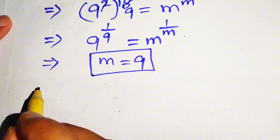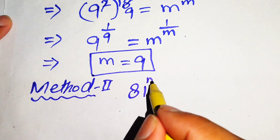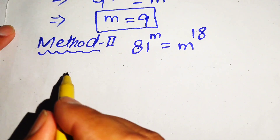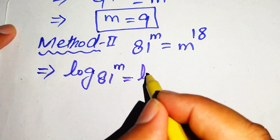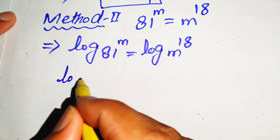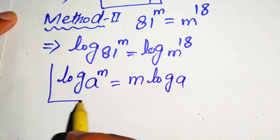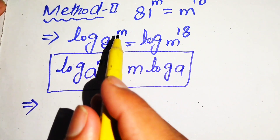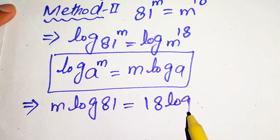Now we solve this problem by method two. The equation is 81 to the power of m equals m to the power of 18. In method two, we use the common logarithm on both sides, giving log of 81 to the power of m equals log of m to the power of 18. Using the property log(a^m) = m·log(a), we move the exponents to the front: m times log 81 equals 18 times log m.